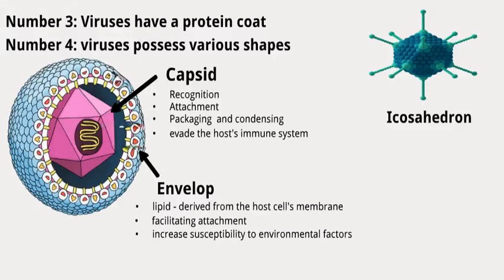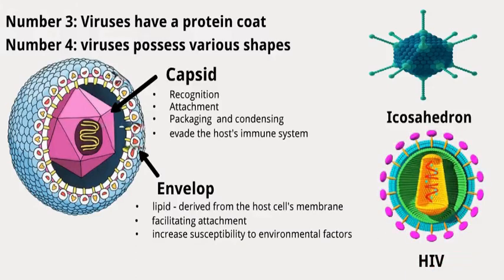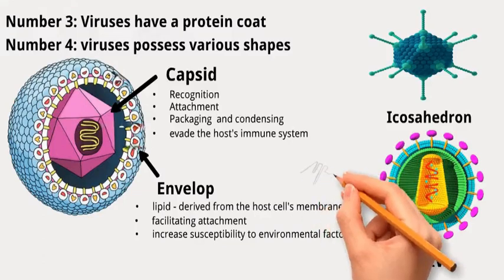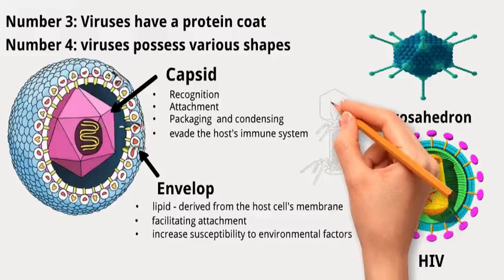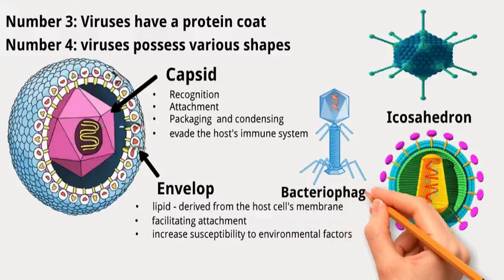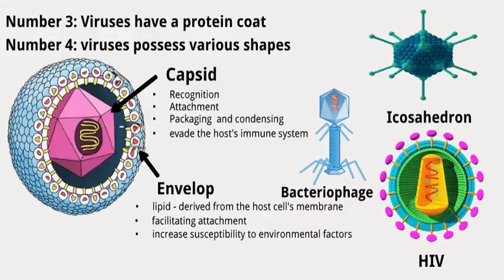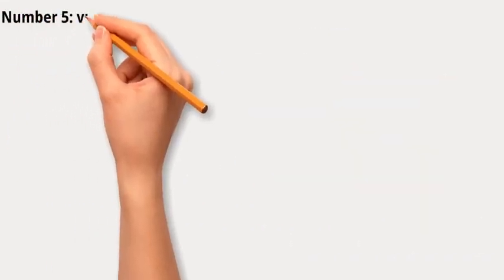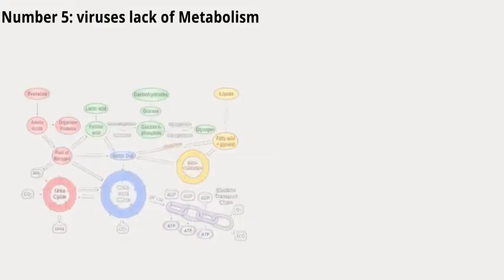Number four: viruses possess various shapes. Some viruses have capsids shaped like a 20-sided figure called an icosahedron — for instance, adenovirus, which causes respiratory infections. In some animal viruses like HIV, there is an outer envelope of lipids from the host cell's membrane. Bacterial viruses called bacteriophages are quite complex, resembling moon landing modules, with a head containing DNA, a tail, and tail fibers that help them attach to bacteria and inject DNA.